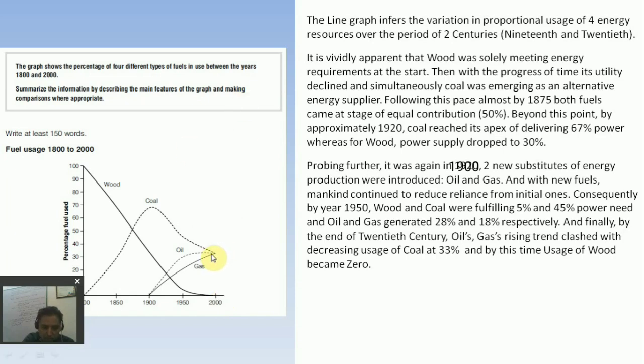Finally, by the end of the 20th century, oils and gas rising trend clashed with decreasing usage of coal at 33%. From here coal was coming and from here oil and gas were coming, so they clashed at 33%. By this time usage of wood became zero.